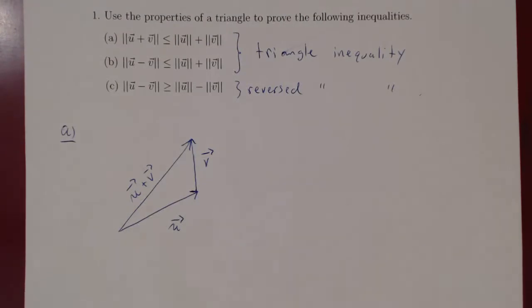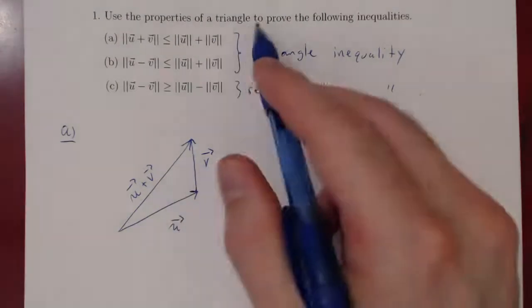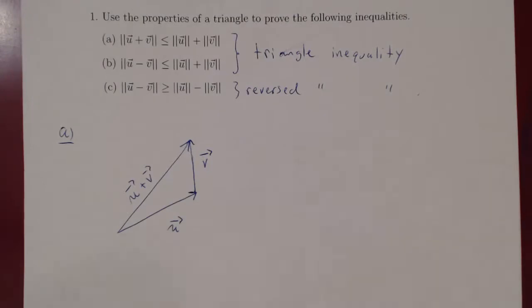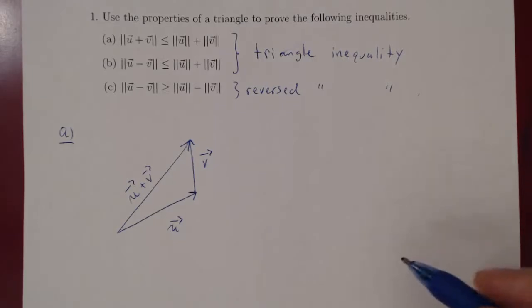And now if you remember, and this is the property of the triangle that we'll use, given the triangle, the sum of any two of the edges has to be at least the length of the third edge.